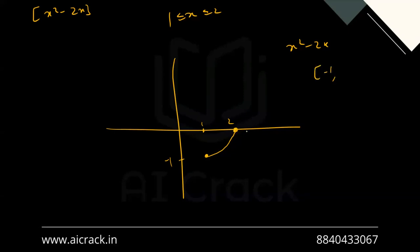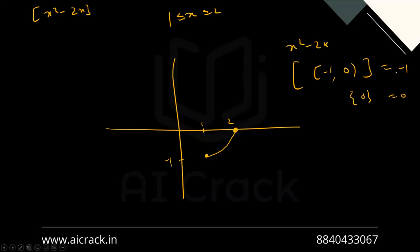So GIF(x² - 2x) on [1, 2] has two parts: it takes value -1 from x = 1 up to (but not including) x = 2, and it takes value 0 at exactly x = 2. This gives us a step-function-like graph.